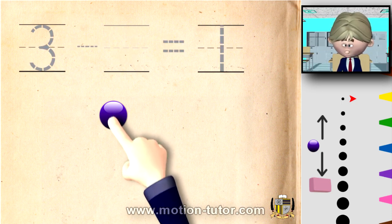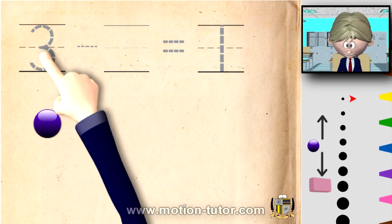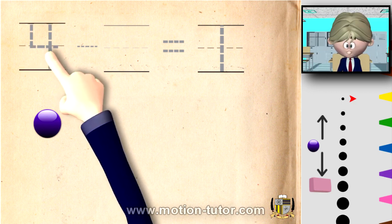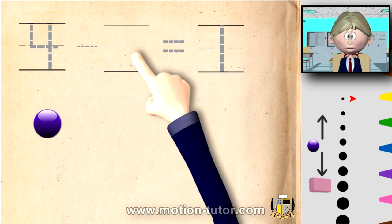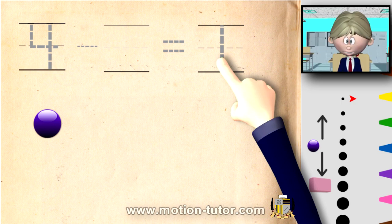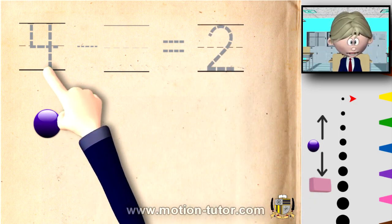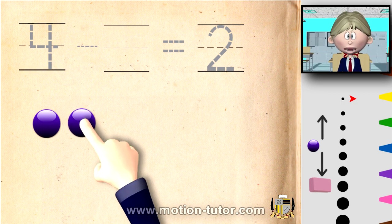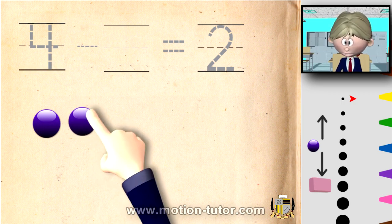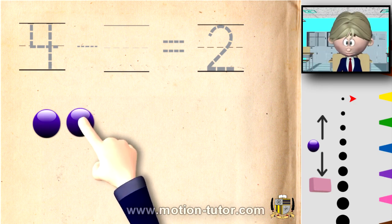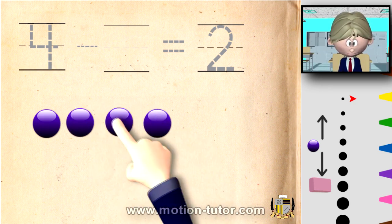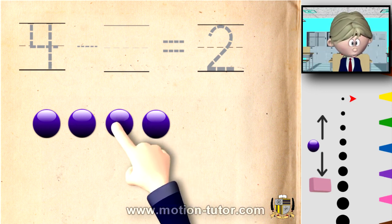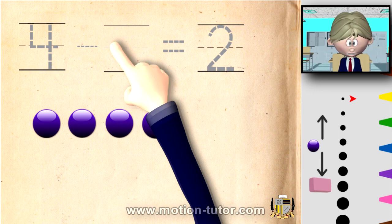Let's try another example: we have four and we're going to take away some amount, and we're going to be left with two. So four take away some number is equal to two. Let's take a look at that with our marbles.